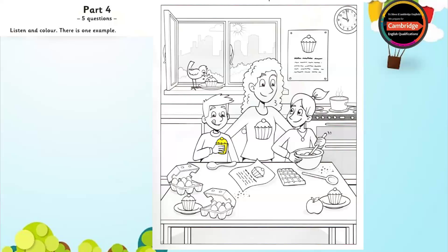Two. Can you see the cake on the poster? On the poster on the wall? Yes, I can. Good. Colour that cake purple, please. OK.